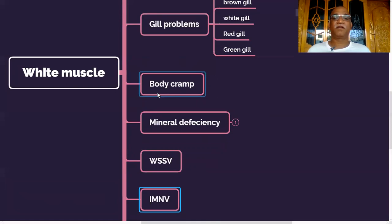Another reason for white muscle is body cramp. Spontaneously white muscle develops in case of body cramp. The reasons for body cramp are, first one is high temperature. If you lift the check tray during daytime, especially midday, you will find body cramp. And another reason as per the literature is mineral imbalance, not mineral deficiency. So I am repeating once again, it is due to mineral imbalance and not due to mineral deficiency.